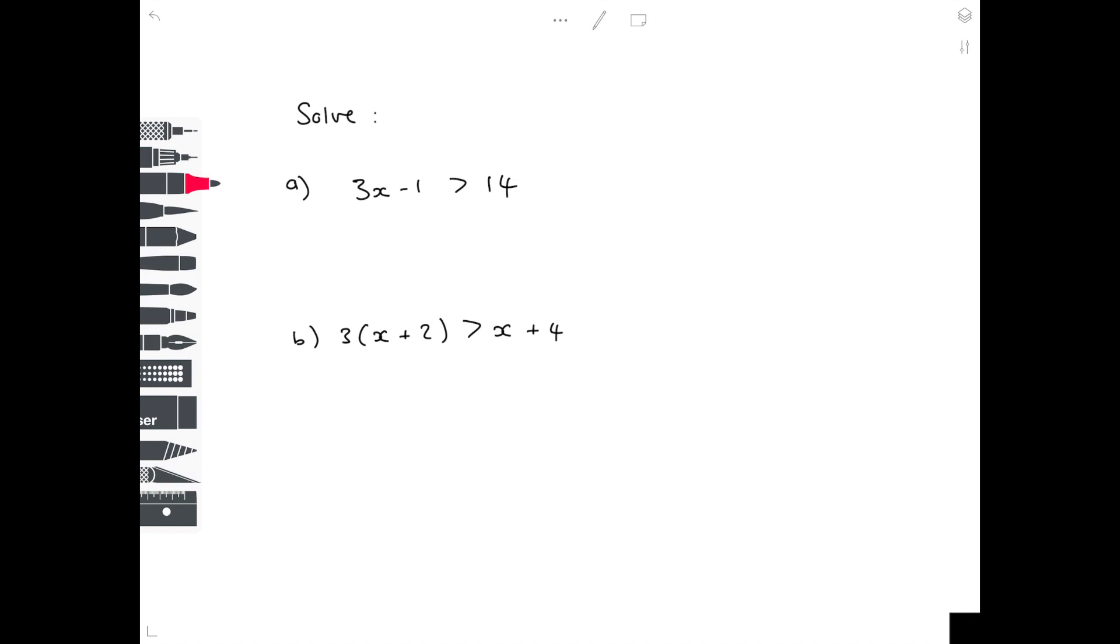Looking at a couple more examples. So 3x minus 1 is greater than 14. Let's get our x by itself. So we need to get rid of that minus 1. Well how do you make it equal 0? By adding 1 to both sides. And then we simply need to divide by 3 in order to make x by itself. So x is greater than 5 is your final answer.